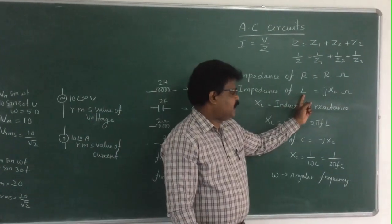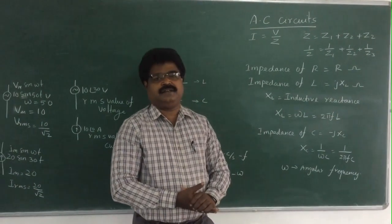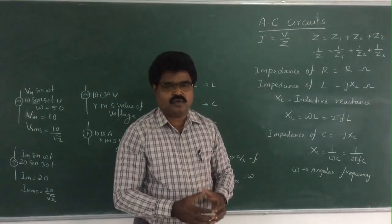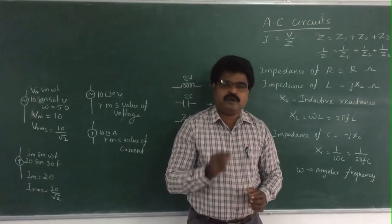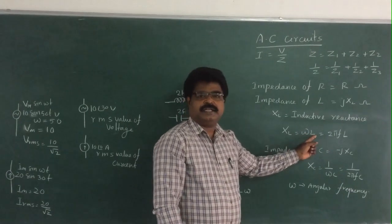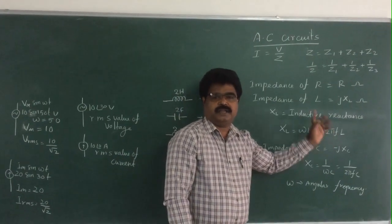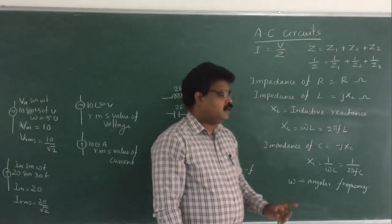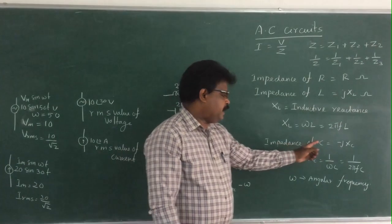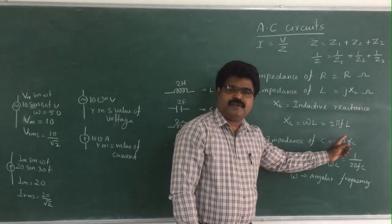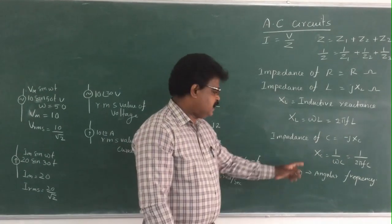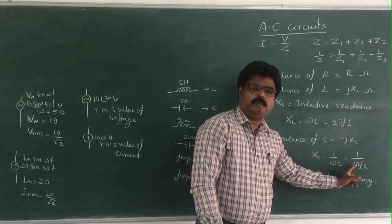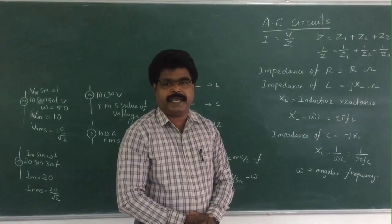The impedance of inductance is equal to j·XL, where XL is the inductive reactance, equal to ω·L, which equals 2π·F·L. The impedance of capacitance is equal to −j·XC. The unit is ohm. XC equals 1/(ω·C), which equals 1/(2π·F·C).